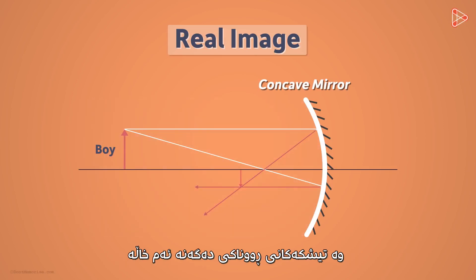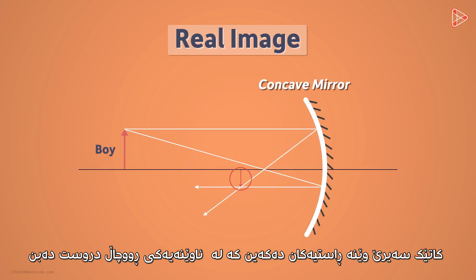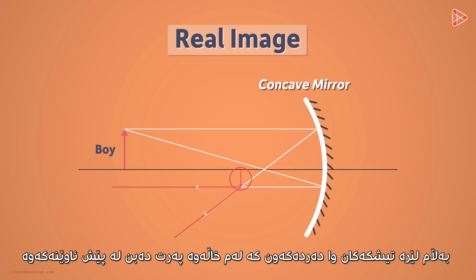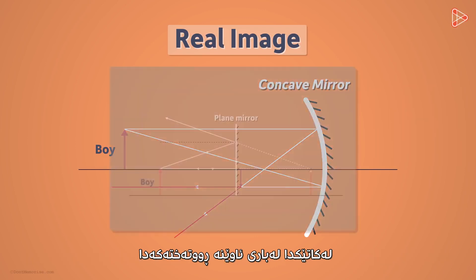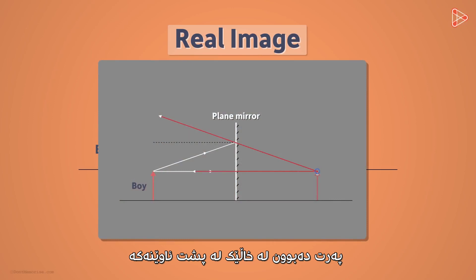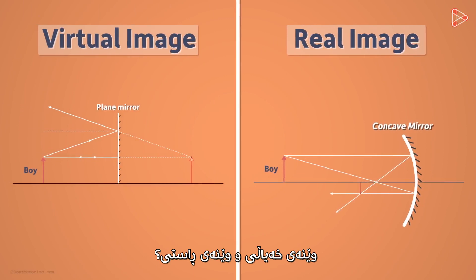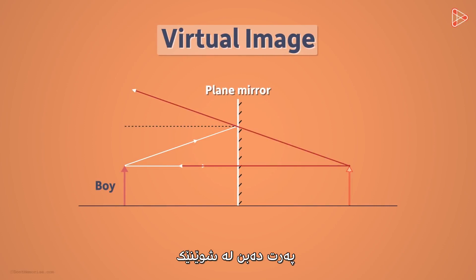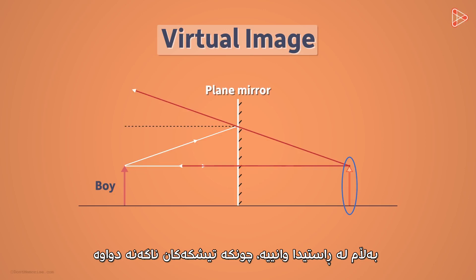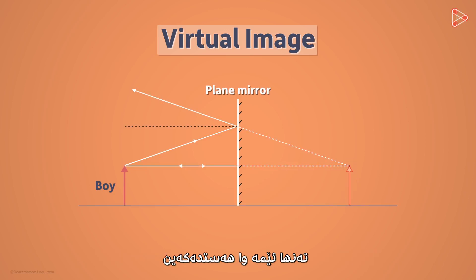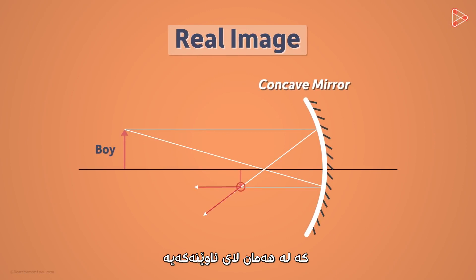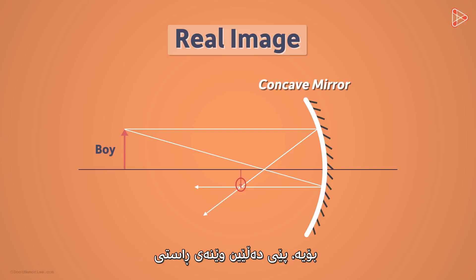Light rays do reach this position. When we look at the real image formed by a concave mirror, it also seems to us that the light rays are diverging. But here the rays actually are diverging from a point in front of the mirror. Whereas in the case of a plain mirror, it appears to us that the rays were diverging from the point behind the mirror. So the difference between a virtual image and a real image: when we look at a virtual image, it appears that the light rays are diverging from a point somewhere behind the mirror, but in reality they aren't, as no light reaches behind the mirror — it's only our perception. In the case of a real image, the light rays are actually diverging from the point present on the same side of the mirror. Light rays indeed reach this point, hence we call it a real image.